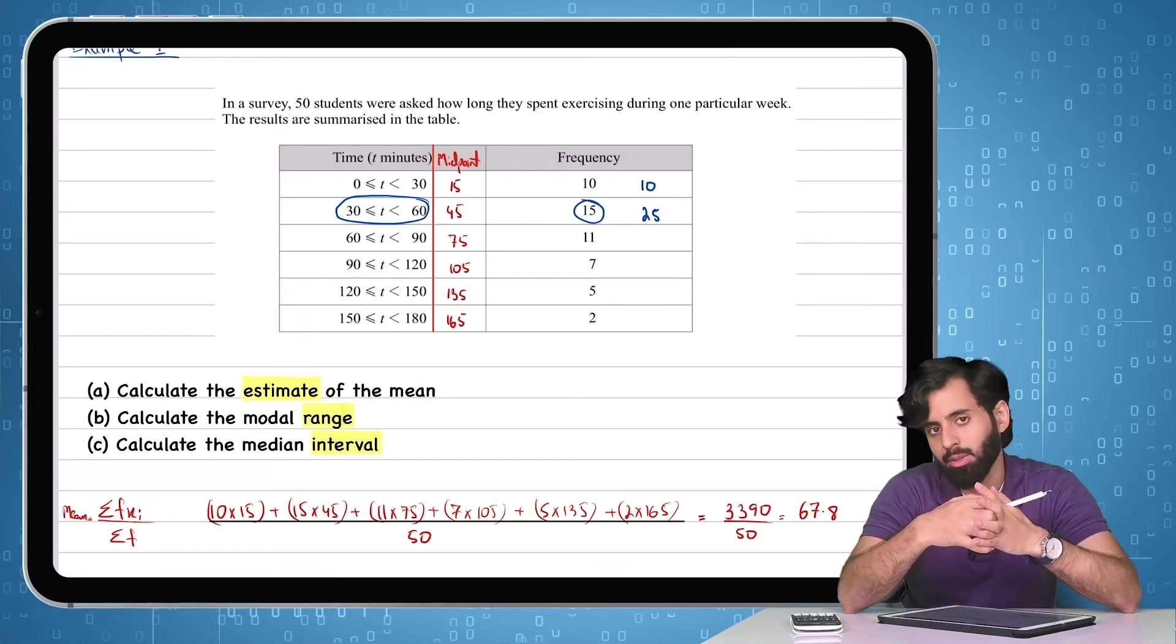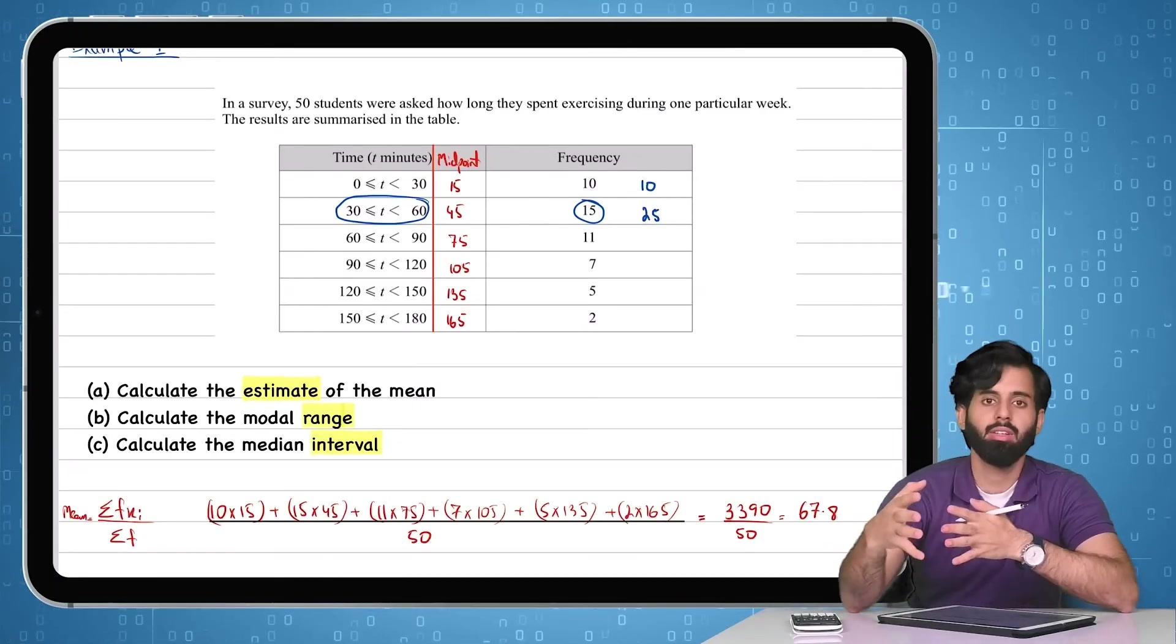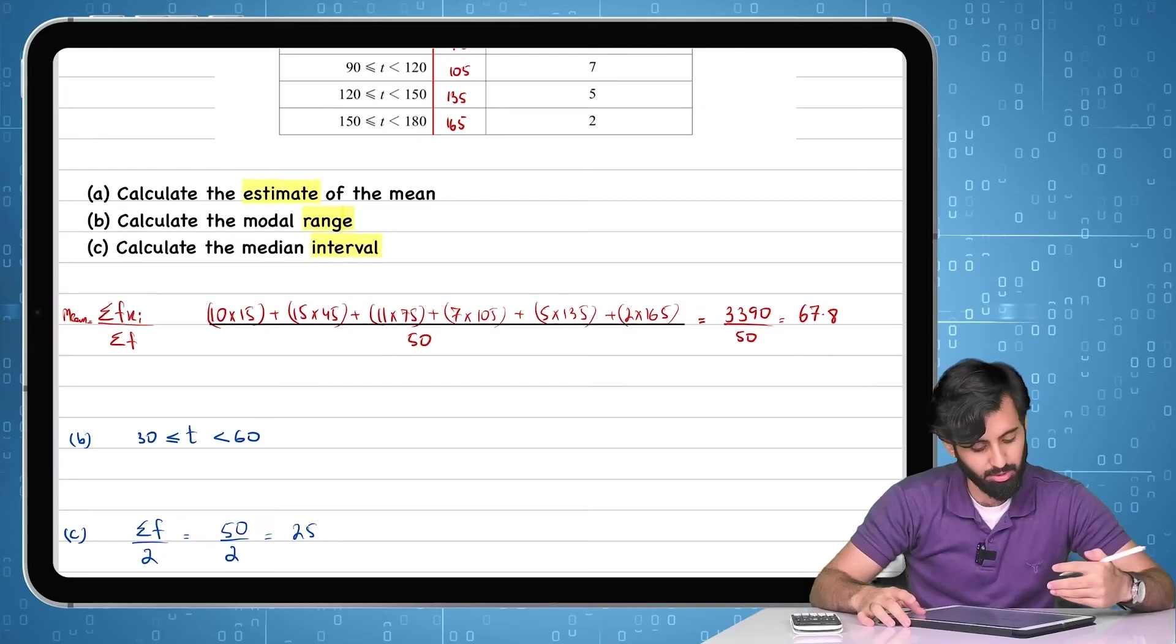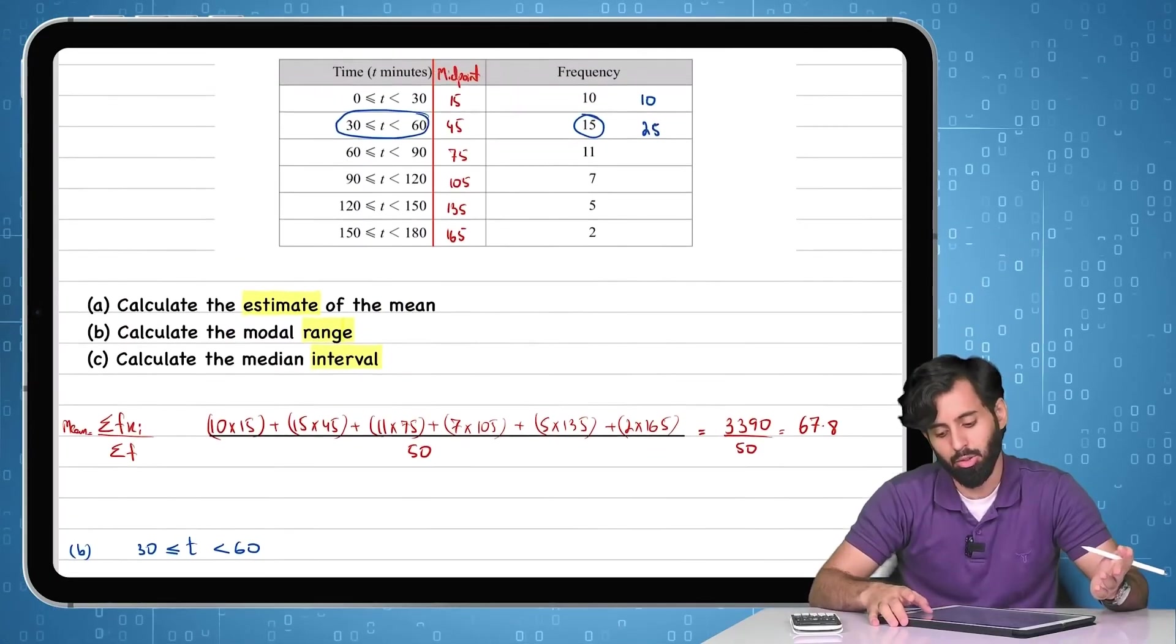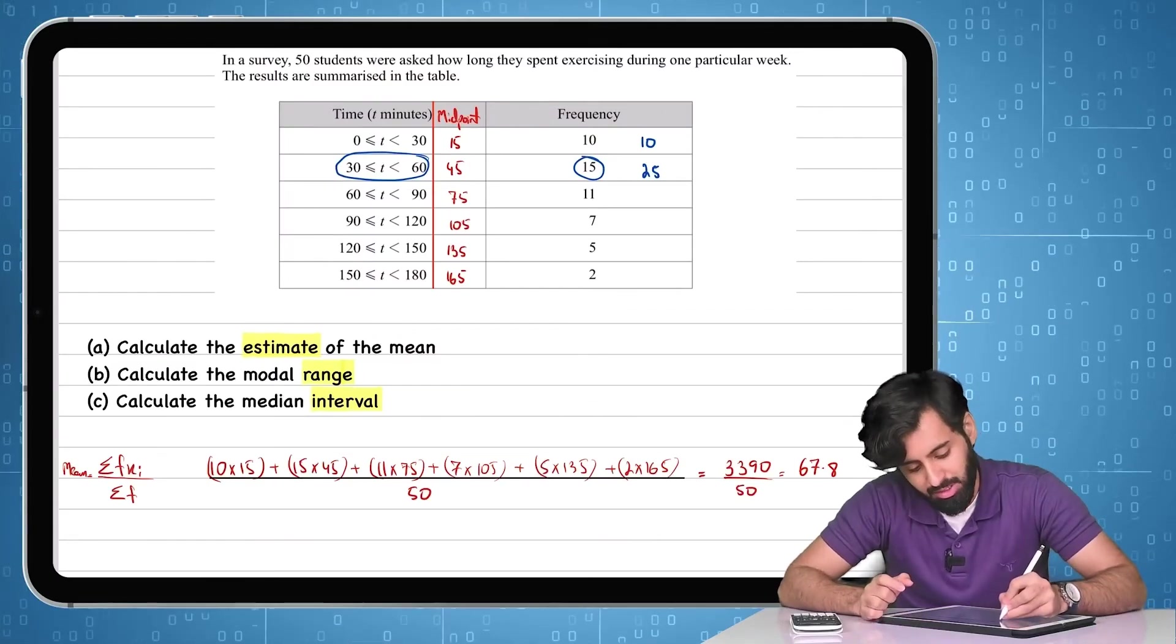Now the class in which the cumulative frequency is equal to or greater than the median, which is 25, the middle term, which is 25, that class is going to be your median interval. So you can see here, the median interval is also the same as the mode.